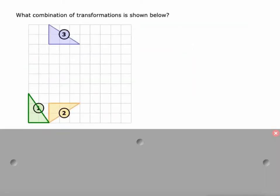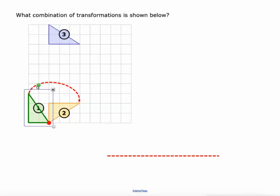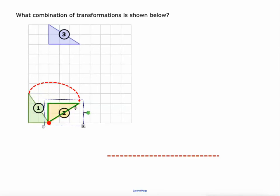Alright, let's look at this one. We have figure one turning into figure two and then figure three. I'm looking at figure one as a rotation around this point — that's my center of rotation — and all the vertices follow a similar arc pattern. I'll rotate it, and you can see how it could have been done in just a single rotation around that red point.